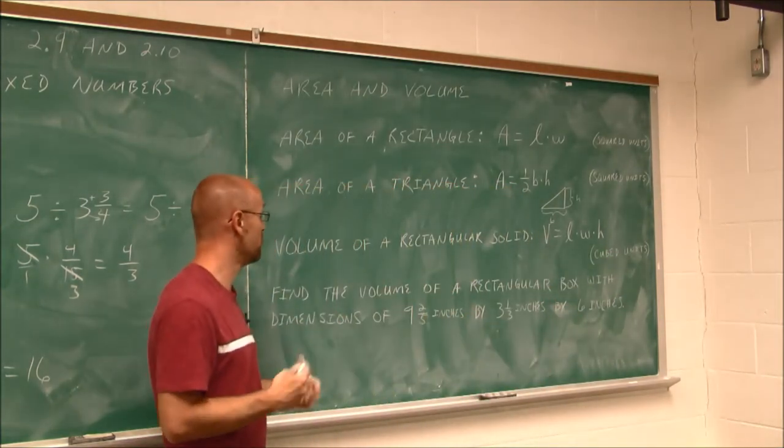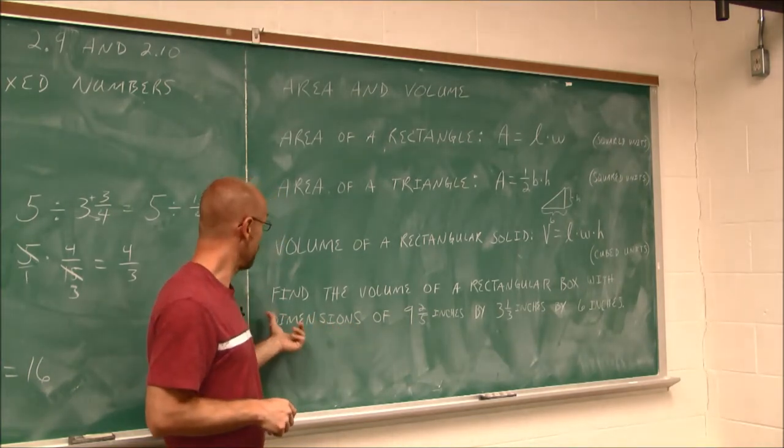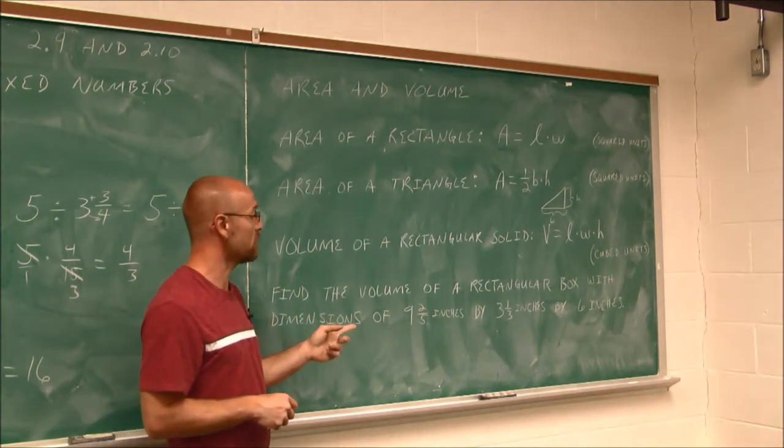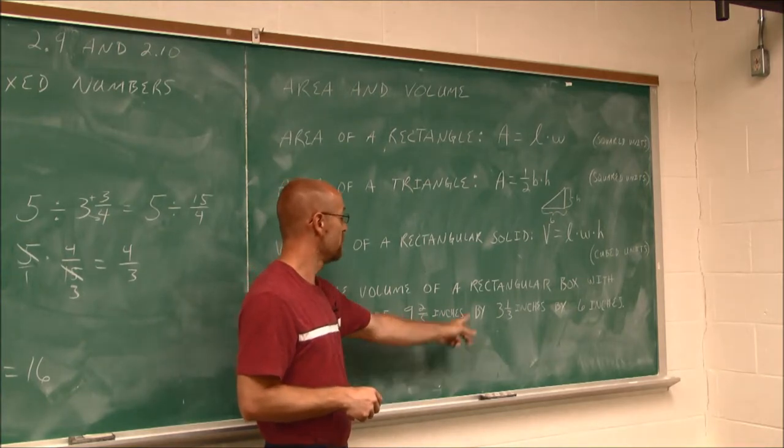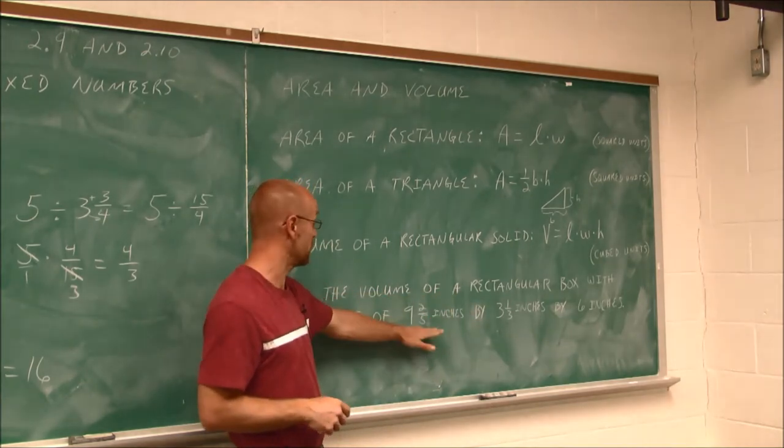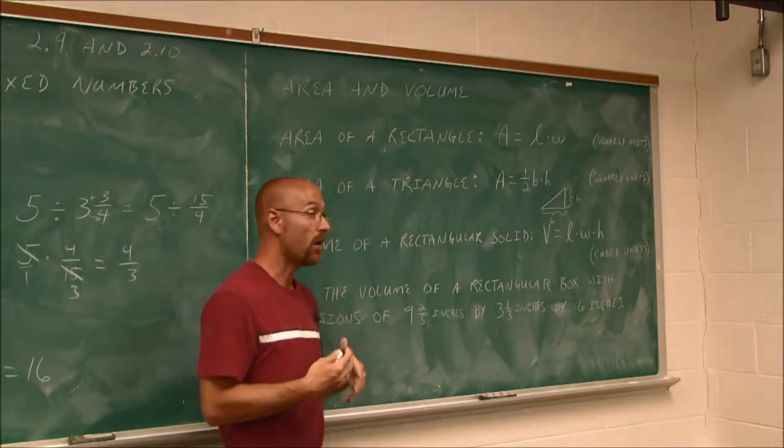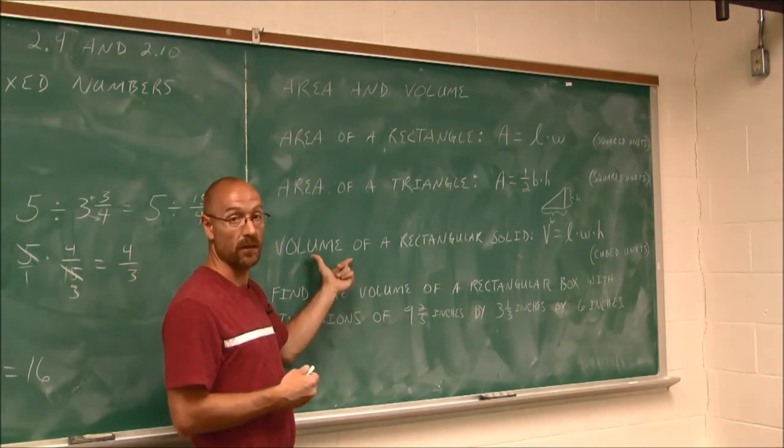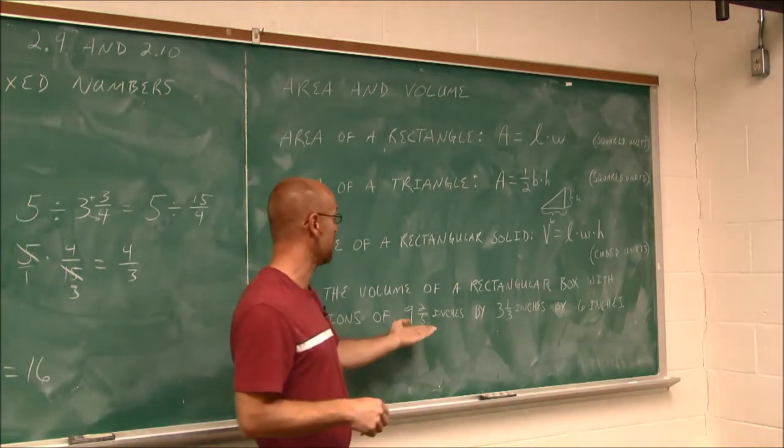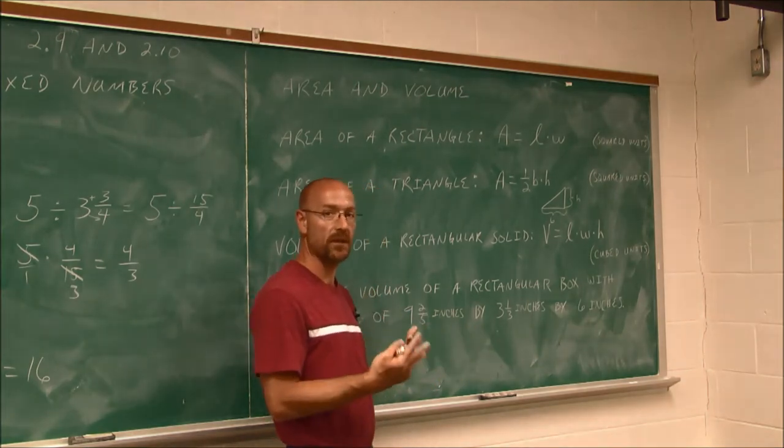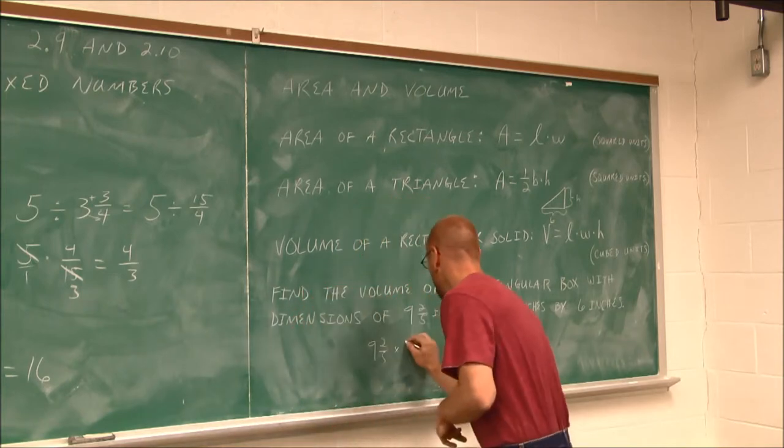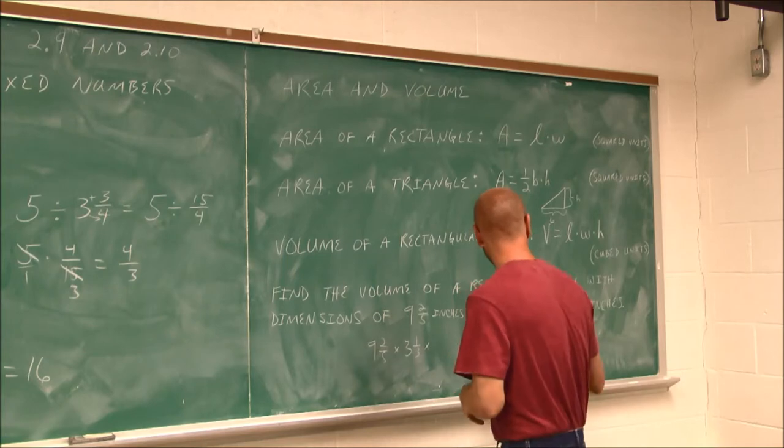Now this next example is where we might see this. It says, find the volume of a rectangular box with dimensions of 9 and 2/5 inches by 3 and 1/3 inches by 6 inches. Well, these three dimensions, the 9 and 2/5, the 3 and 1/3 and the 6, are the dimensions of a rectangular solid. A box is a rectangular solid. So to find its volume, I'm going to multiply length times width times height. Now it doesn't denote which is which. We just have to have all three dimensions. So I'm going to have 9 and 2/5 times 3 and 1/3 times 6.